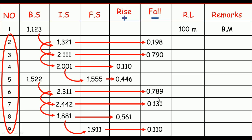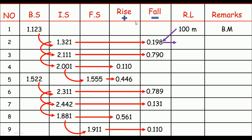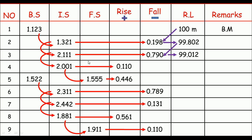Now that we have the rise and fall of each point, the calculation of the reduced level for all remaining points is quite simple and straightforward. Remember, the new RL must be the old RL minus the fall, or it must be the old RL plus the rise. For example, for point 2: 100 minus 0.198 gives us 99.802. So 99.802 is the RL of point 2. The next point is a fall, so RL minus 0.790 gives 99.012 — the RL of point 3.